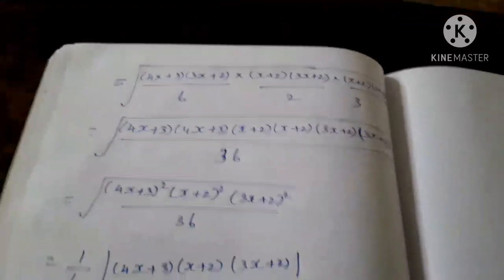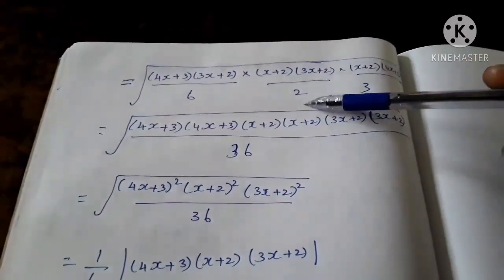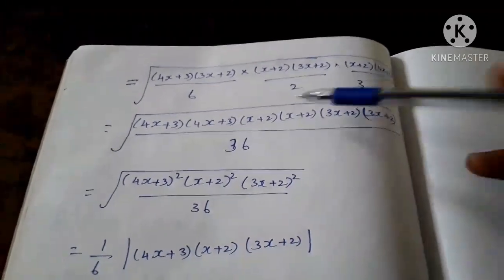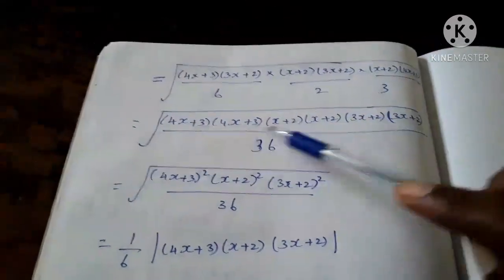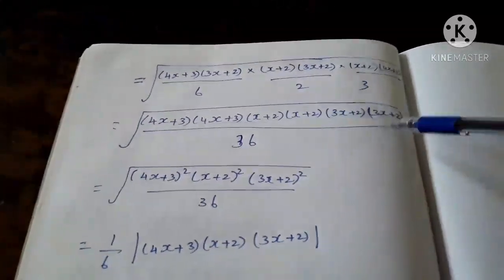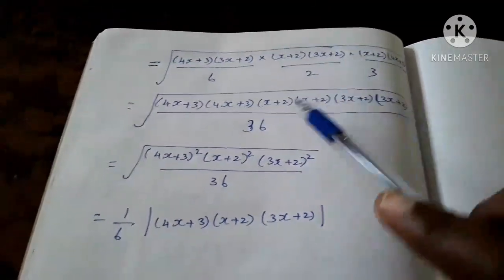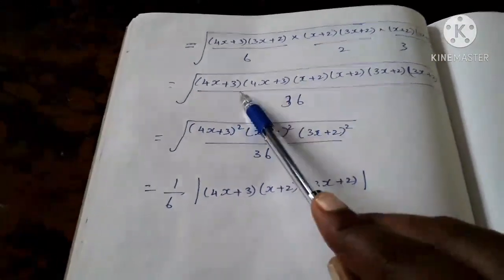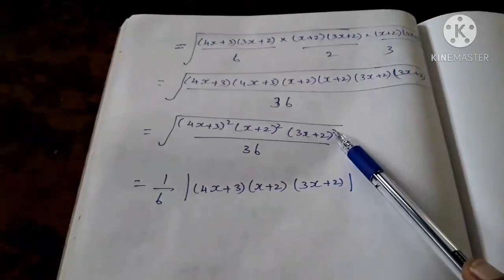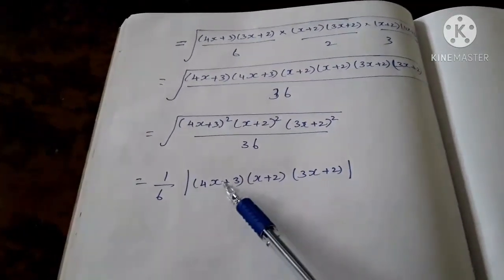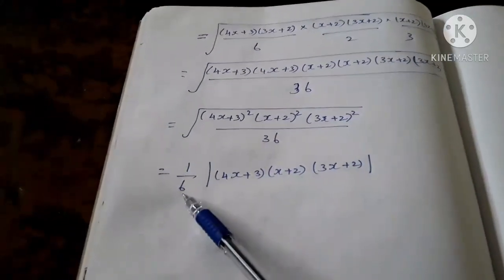Now we substitute: first polynomial = (4x + 3)(3x + 2)/6, second = (x + 2)(3x + 2)/2, third = (x + 2)(4x + 3)/3. Grouping the same factors: (4x + 3)² × (x + 2)² × (3x + 2)², all divided by 6 × 2 × 3 = 36. Taking the square root, squares cancel, and √(1/36) = 1/6. So the answer is (4x + 3)(x + 2)(3x + 2)/6.